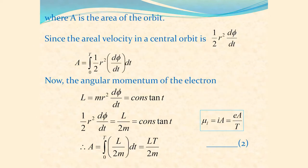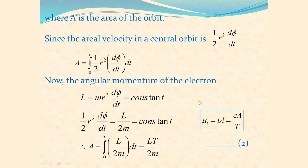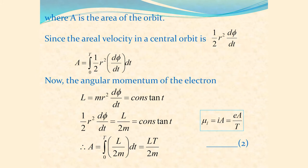The aerial velocity in a central orbit is given by (1/2)R² dφ/dt, where R is the radius vector and dφ/dt is the rate of change of angular displacement. The area of the loop is given by the integral from 0 to T of (1/2)R² dφ/dt. The angular momentum L = mR² dφ/dt is a constant, so (1/2)R² dφ/dt = L/2m. Therefore, area equals the integral from 0 to T of (L/2m)dt, and since L/2m is constant, area = L·T/2m.